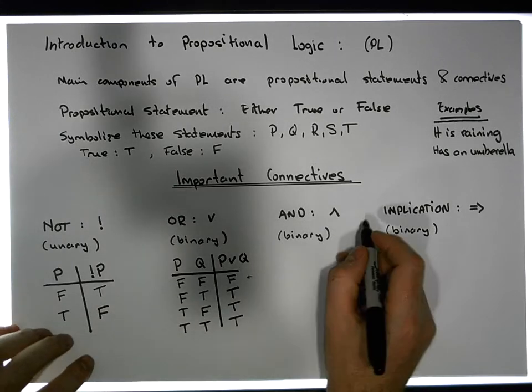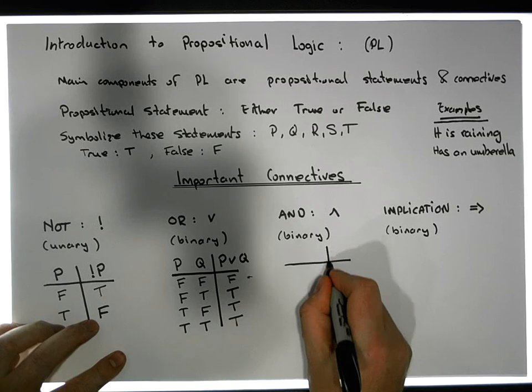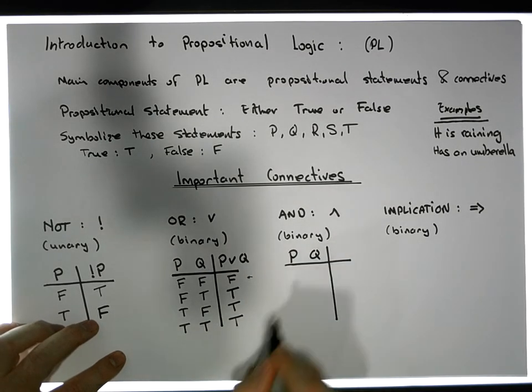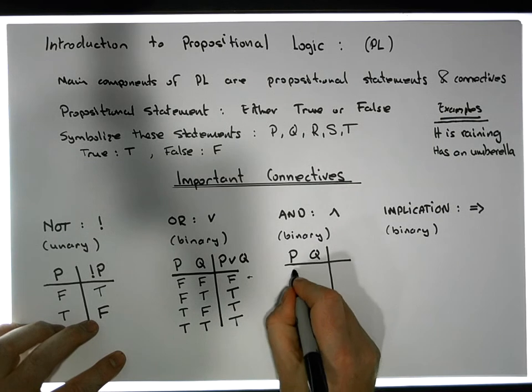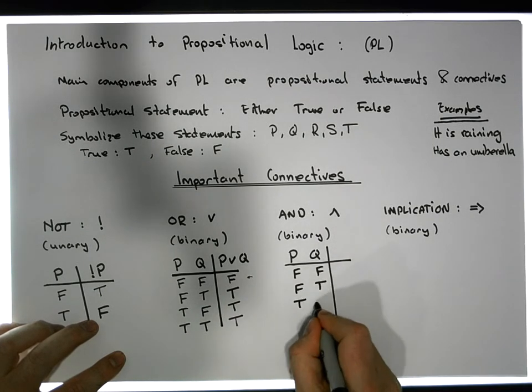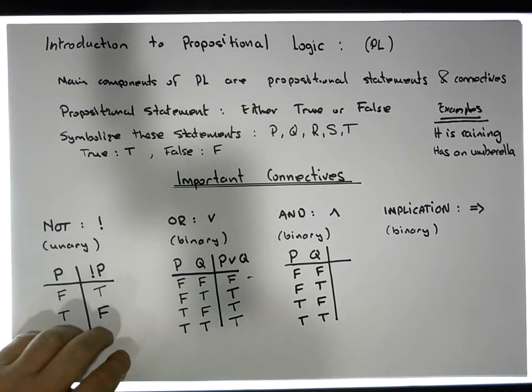Now, an AND operation, the AND connective, once again, we'll define it using a truth table. It takes two propositions, a P, a Q. The states that they could be in are false false, false true, true false, true true.